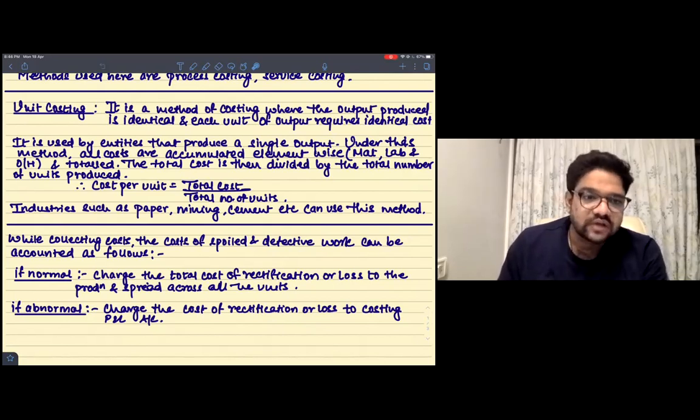So what happens is cost per unit basically is the total cost upon the total number of units. And of course the rule for normal loss and abnormal—any loss or spoilage or defect or wastage—the rule remains the same. If the cost is normal, then it is going to be charged to the customer. And if the cost is abnormal, then it will be charged to the P&L account.